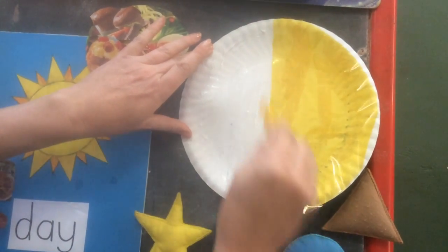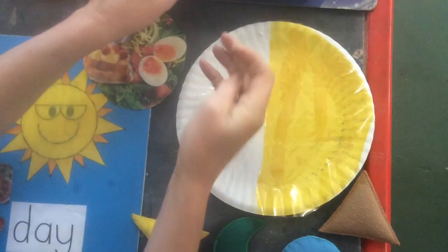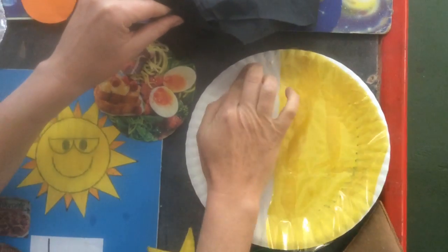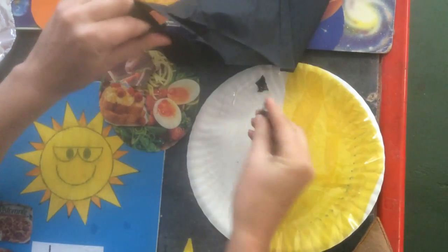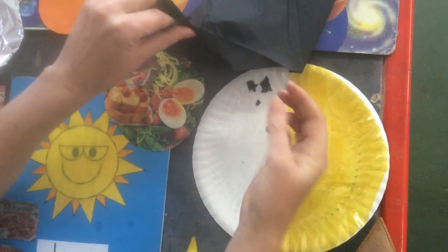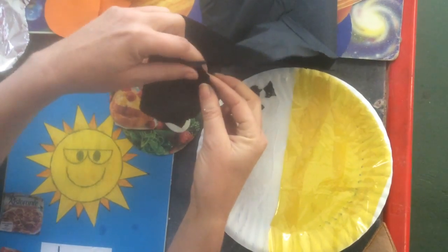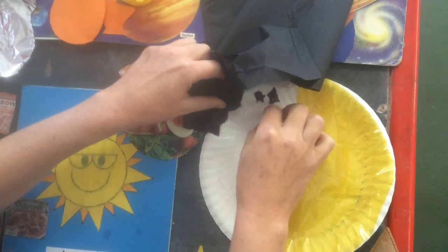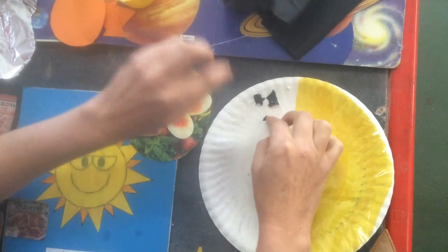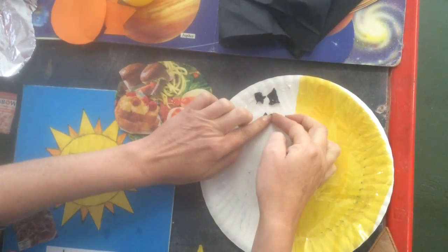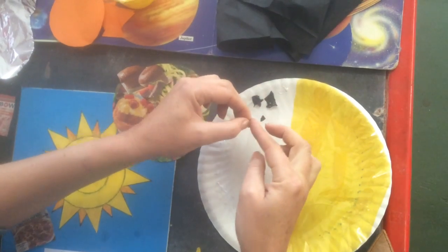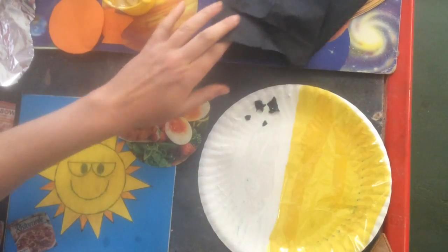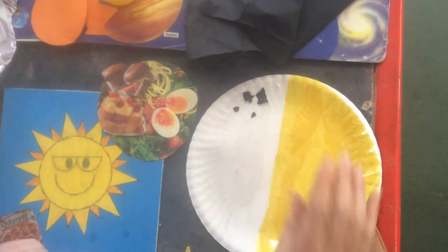We're going to tear a piece and stick it, and tear and stick. This is very good for your little fingers, so pinch the paper between your fingers and pull and tear your paper. And you fill this whole side with your paper to make it a dark night and a light day.